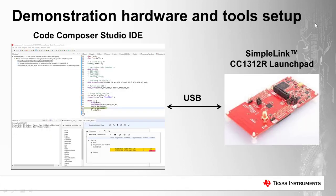Before proceeding, let's look at the actual demonstration hardware and setup. The embedded programs will be running on the SimpleLink CC1312R launch pad. The SimpleLink CC1312 is a wireless MCU that supports sub-1 GHz communication. On the PC, we have Code Composer Studio, an integrated development environment, which we'll abbreviate to CCS going forward.